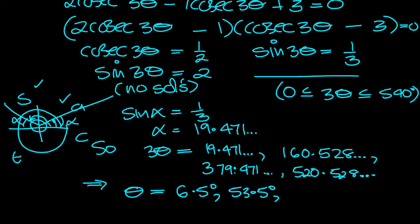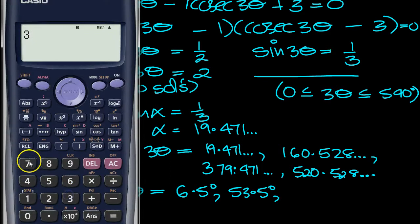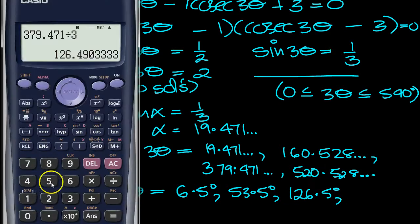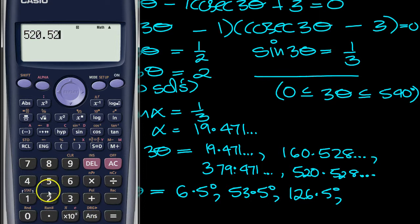And the next one is 379.471 divided by 3, which is 126.5, and then the last one 520.528 divided by 3 is 173.5.